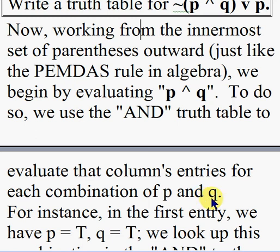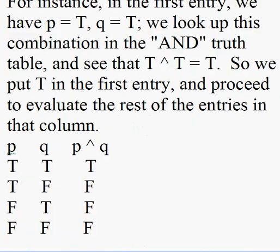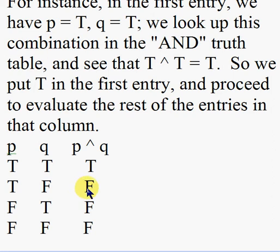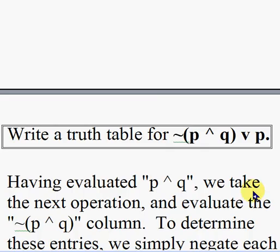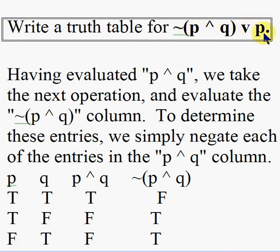To evaluate P AND Q, we use the AND truth table for each combination of P and Q. In the first entry, P is true and Q is true — from the AND truth table, true AND true is true. When P is true and Q is false, P AND Q is false because they are not both true. When P is false and Q is true, P AND Q is false. When P is false and Q is false, P AND Q is false.